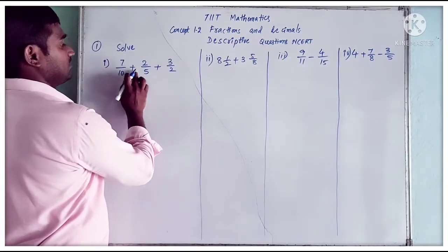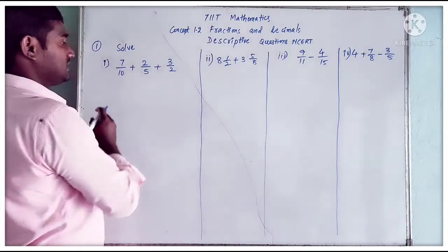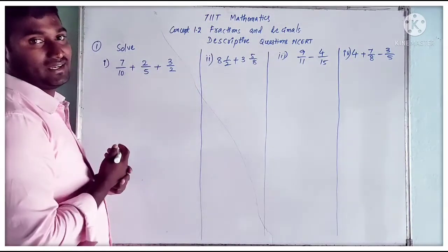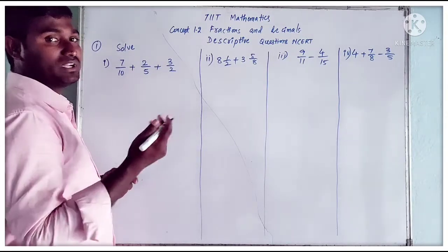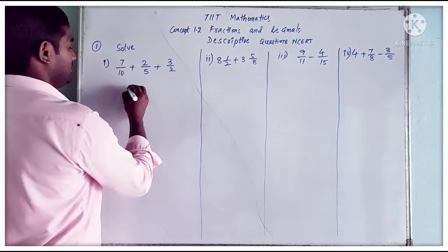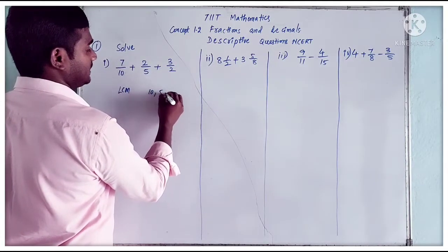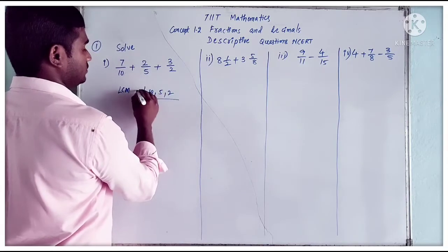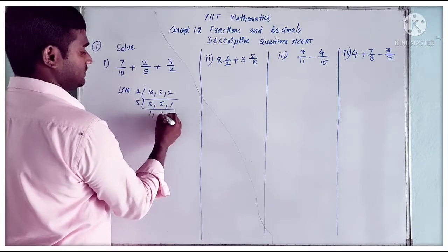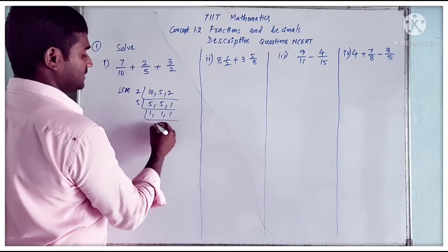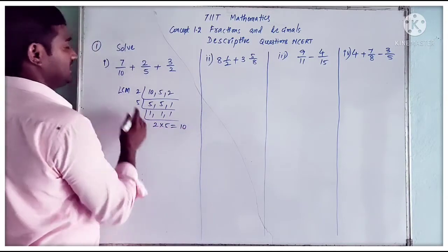So the first question is 7 by 10 plus 2 by 5 plus 3 by 2. Here we have different denominators. If there are different denominators we cannot add directly. So we need to make equal denominators by finding the LCM. LCM of 10, 5, 2 — we get 2 into 5, which is equal to 10. So the LCM is 10.